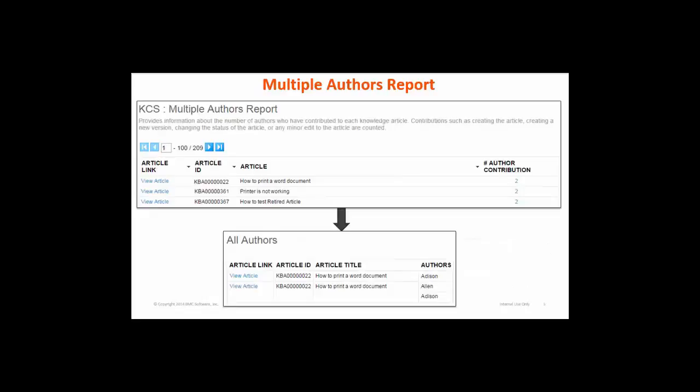The next report is the Multiple Authors Report. This report helps you know how many article authors have collaborated and contributed to create and update knowledge articles. Article authors can contribute in the form of creating articles, creating a new version of articles, making minor edits, and changing the status of articles. To view the details of an article you can click on 'Contribution' to view the All Authors child report, which displays all the authors who contributed to a particular article.